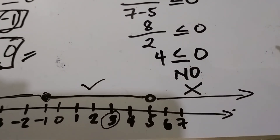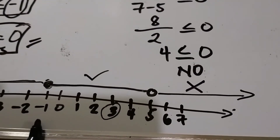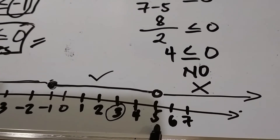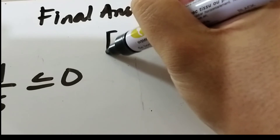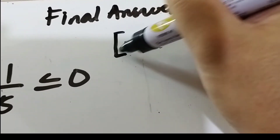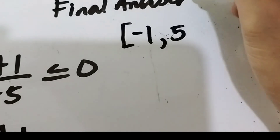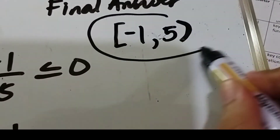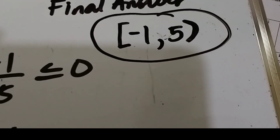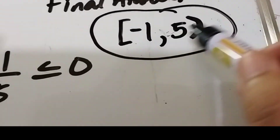Our final answer in interval notation is from negative 1 to positive 5, wherein positive 5 is not included. We write this as negative 1 with a closed bracket — meaning included — to positive 5 with an open bracket — meaning not included. So the possible value of x is from negative 1 to positive 5, where positive 5 is not included.